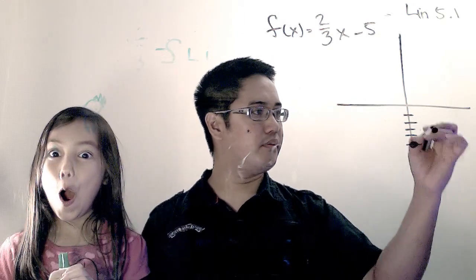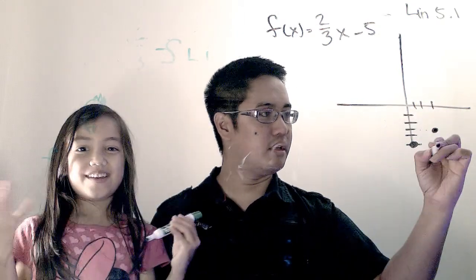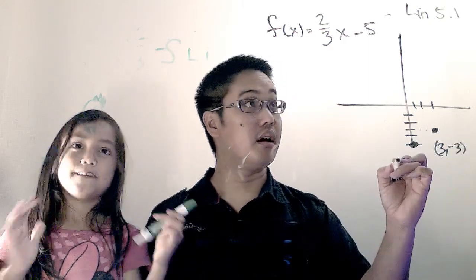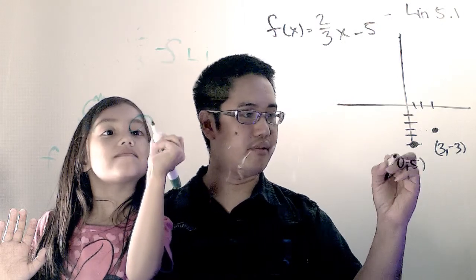The coordinates of this point would be three, comma, negative three. This is zero, comma, negative five, sorry.